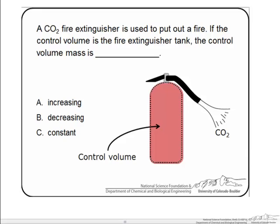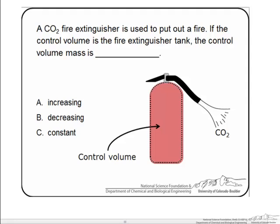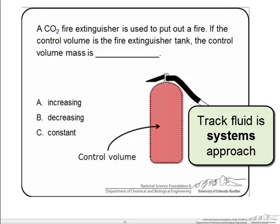The question is what is happening to the control volume mass. If we tracked the mass in the tank and what happens to it with time and where it goes, that is a systems approach. But here we are looking at just the control volume. Although we know mass is conserved, the mass within this control volume is decreasing as it comes out of the extinguisher.